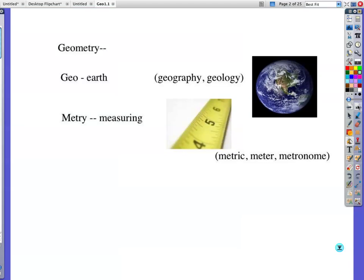Geometry, the word comes from geo, which is anything dealing with the earth, and you see this word in geography and geology. And metri means measure, and think of other things that have that kind of word in it, like metric, meter, metronome, they keep measure of things.